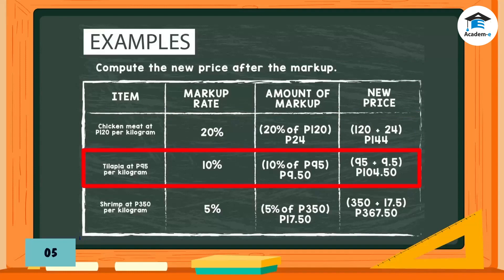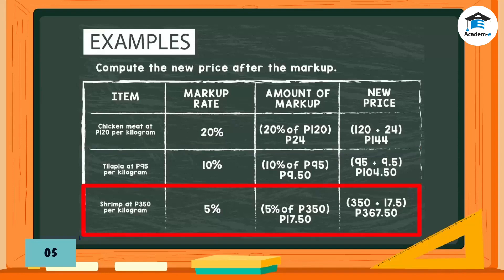Item: tilapia at 95 pesos per kilogram. Markup rate: 10%. Amount of markup: 10% of 95 pesos = 9 pesos and 50 centavos. New price: 95 pesos + 9.50 pesos = 104 pesos and 50 centavos.